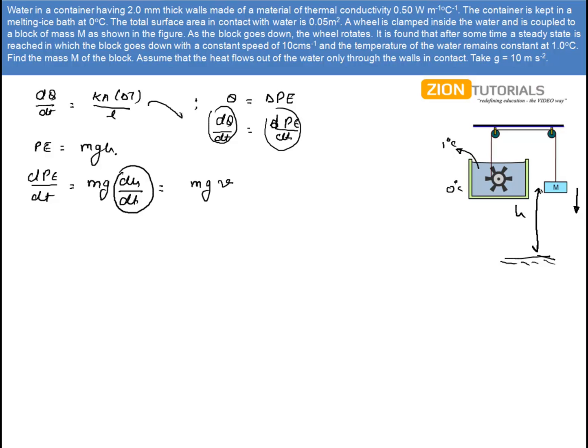So, now we just have to substitute the value of this and this over this equation. So, I have value of K as 0.5. Area is given to me as 0.05. Delta T that is 1-0. Into L or the length that is given as thickness 2mm. And it equals to mass of the block into G, that is 9.8, into velocity as 10 centimeter per second. So, 0.1 meter per second.